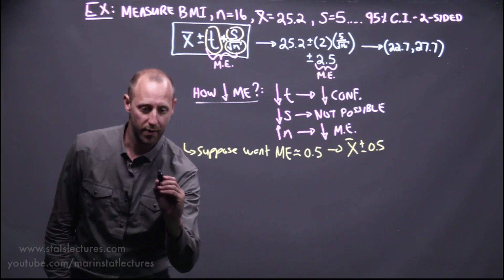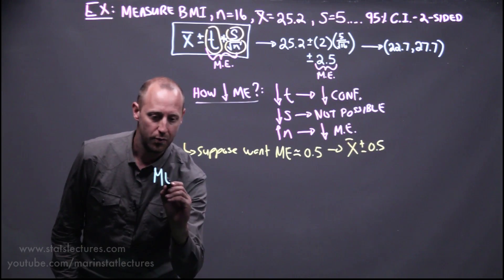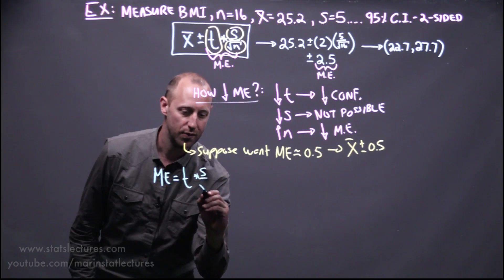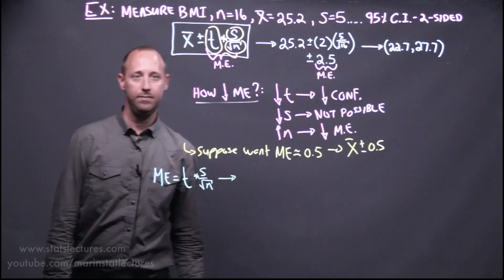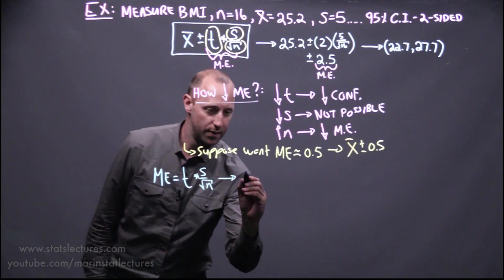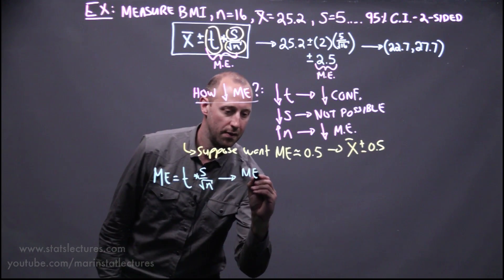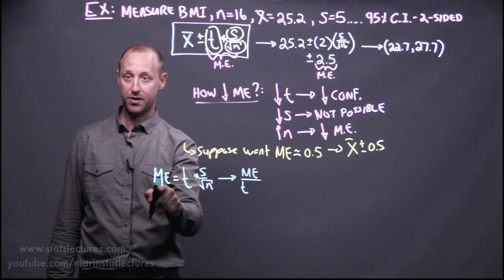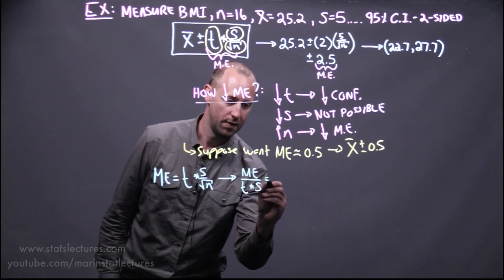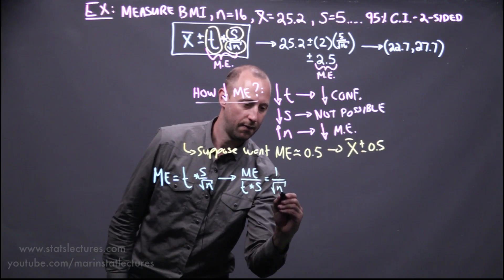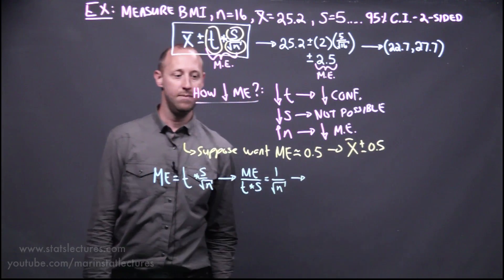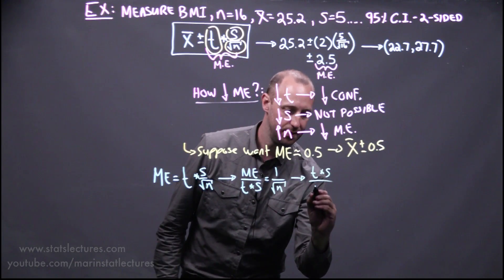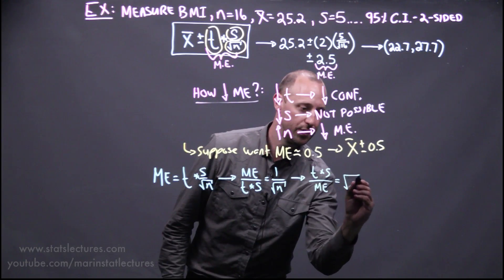What sample size are we going to need to take in order to get that margin of error? So let's work our way there. We know that the margin of error is t times s over the square root of n. Now, we're just going to rearrange this a little bit. What I'm going to do is I'm going to bring t to the other side here, and I'm also going to bring the sample standard deviation to the other side. Then what I'm going to do is just flip both of these.